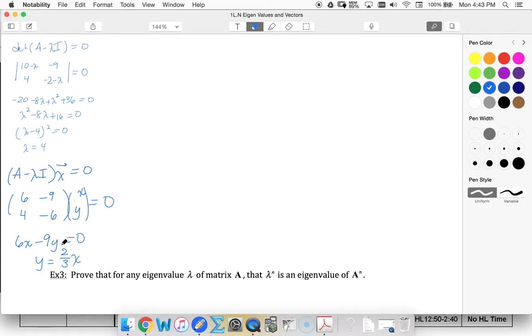Therefore my null space, or my solution to the homogeneous equation, is going to be 1, two-thirds T.